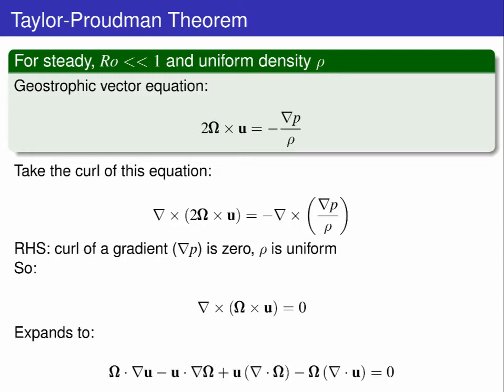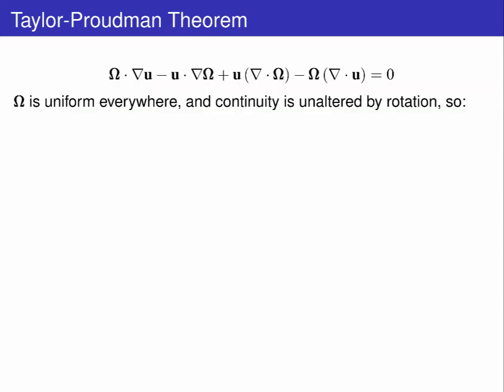This expands into four terms. Omega is uniform, so the two terms with gradients of omega are 0. One term is omega times the continuity equation, which for our assumptions is 0, leaving omega dot grad u equals 0.